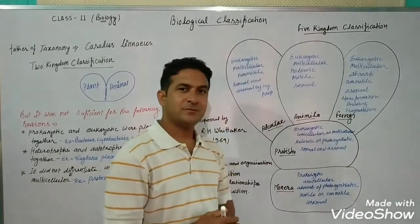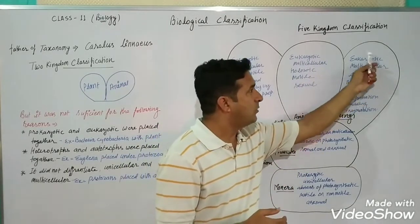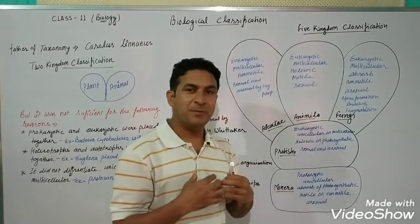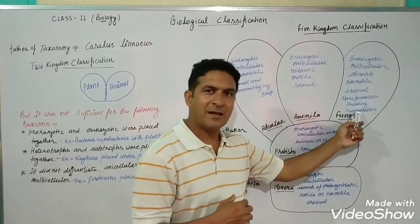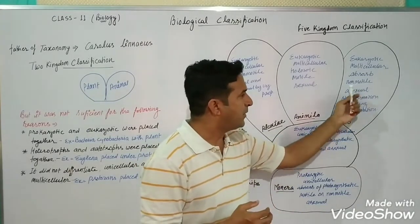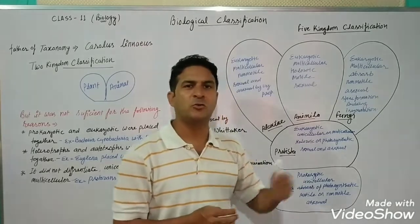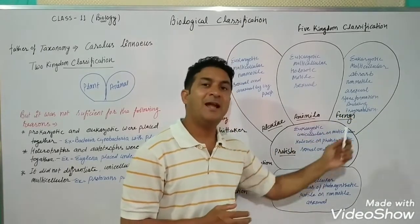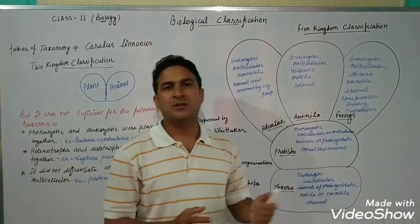Finally, Kingdom Fungi — the very special addition of the five kingdom classification. Fungi are multicellular eukaryotic organisms with a great power of absorption; they intake food through absorption. They are heterotrophic and non-motile — they cannot move from one place to another. They reproduce by asexual mode through three methods: spore formation, budding, and fragmentation.